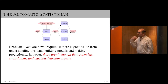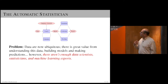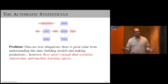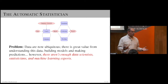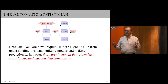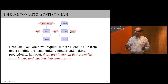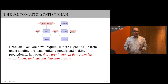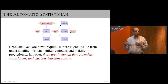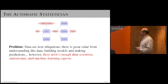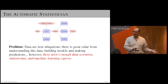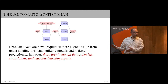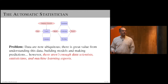The problem the automatic statistician is trying to solve is that we've got lots of data with a lot of value in it, but we can't afford — even if we're a hedge fund — to hire enough data scientists to extract that value. There aren't enough data scientists and machine learning researchers to meet the demand. One approach is to train up more people; the other approach is to automate what they do.